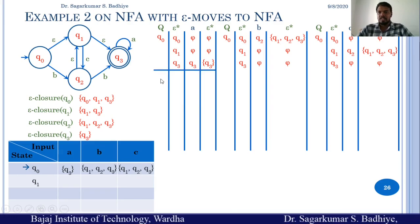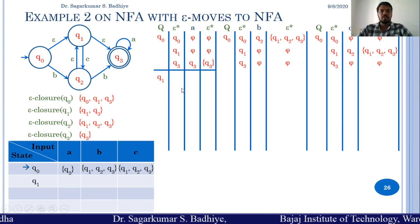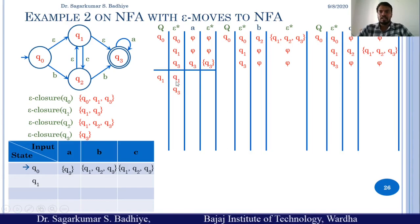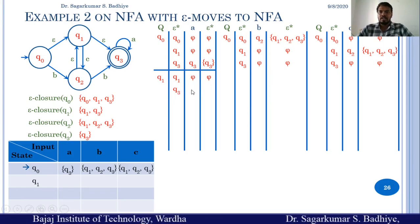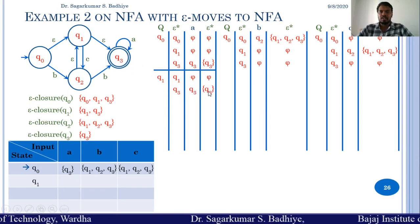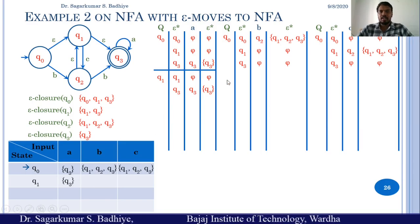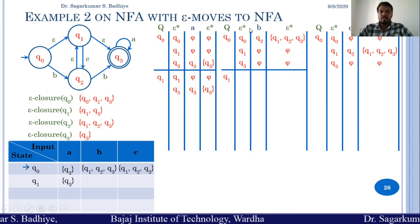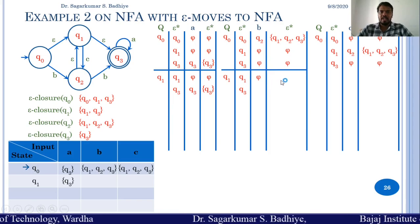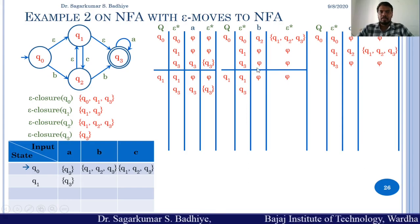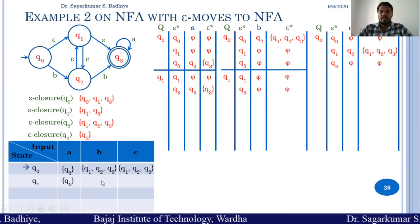Now we compute for the next state Q1. Epsilon closure of Q1 is Q1, Q3. Transition from Q1 on A: Q1 on A has no transition — phi. Q3 on A goes to Q3, and epsilon closure of Q3 is Q3. So we add a transition in the NFA table for Q1 on A that goes to Q3. For Q1 on B: epsilon closure of Q1 is Q1, Q3. Q1 on B has no transition — phi. Q3 on B has no transition — phi. So Q1 on B in the equivalent NFA goes to phi.